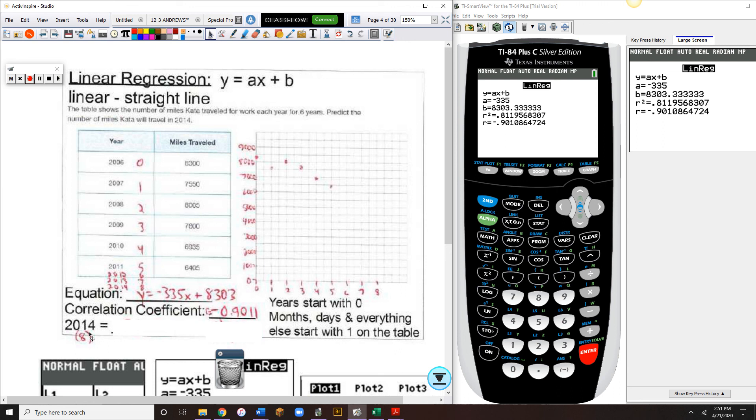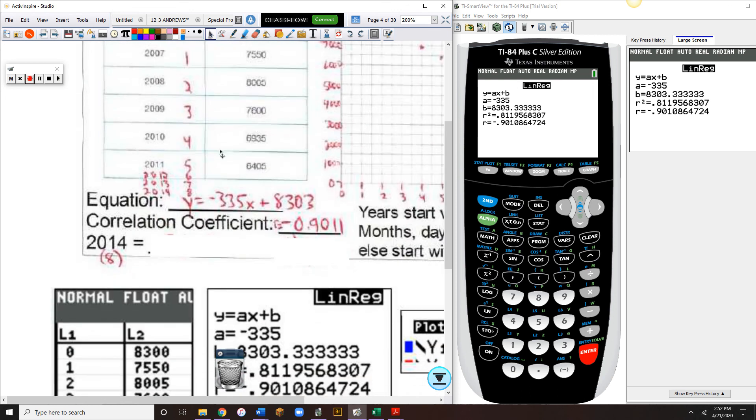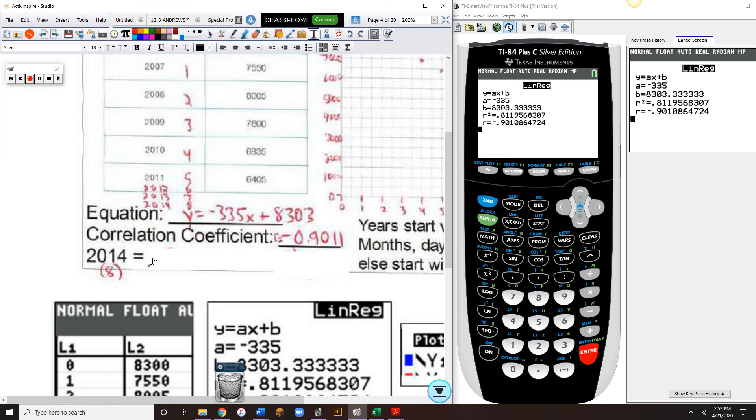So to sub in and find out that prediction. The prediction it's asking for is 2014, how many miles will she travel in 2014? You can see where we've extended the chart a little bit. So 2011 represented the fifth year. We've got 2012, which is the sixth year. 2013 is the seventh year. And 2014 is the eighth year. We're going to take our equation.